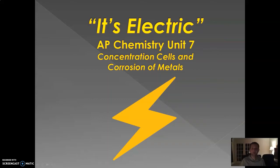Hope everybody's doing okay. What we're going to do today is take a look at something called concentration cells and corrosion of metals as we continue through our electrochemistry unit. A concentration cell, based just off of the name, is going to be some voltaic cell where the electron movement depends on the difference in concentrations of our two half cells.